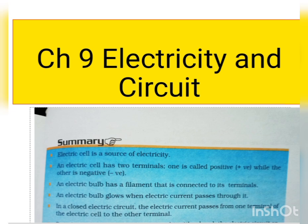What is important for electricity to pass? The electric circuit must be closed. Electricity flows only when the electric circuit is closed. In a closed electric circuit, the current passes from one terminal of the electric cell to the other terminal. If the filament is broken, the circuit is incomplete and the bulb will not glow.